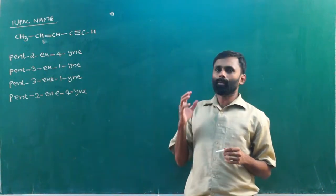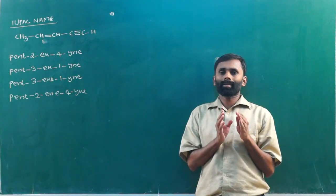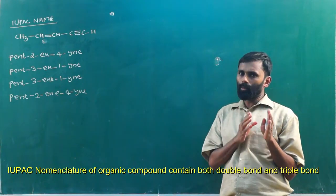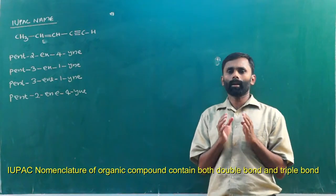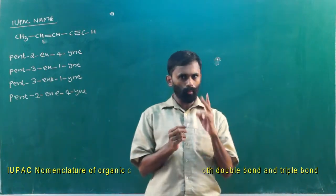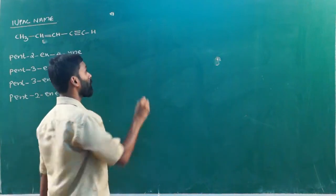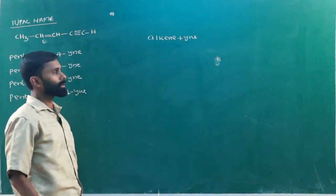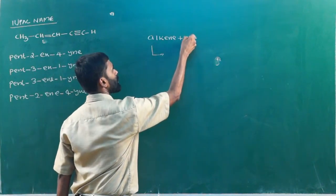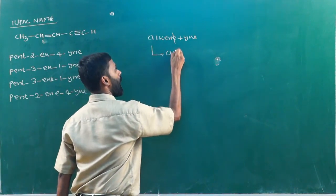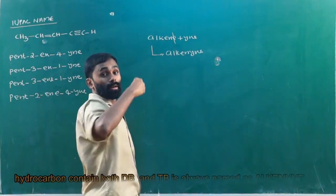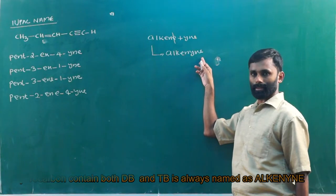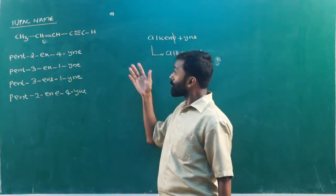Dear students, this is what we are discussing. IUPAC nomenclature is very important. One question is: in this compound, there is a double bond and a triple bond. We know that for double bond and triple bond, we will name using the IUPAC format — the alkene and alkyne format. Now, we will find the correct IUPAC name of the following compound.